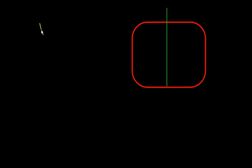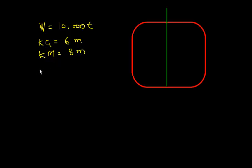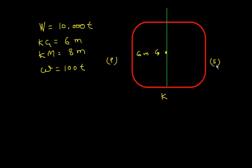If we load something on the ship, what happens to list? Let's start with this vessel. Suppose displacement is 10,000 tons, KG of the ship is 6 meters, and KM is 8 meters. We load a small weight W of 110 tons, and we define the coordinates: K and G, which is 6 meters. Looking at the ship in the transverse direction, this is port side and this is starboard side. The cargo is loaded somewhere here, the distance from the centerline is 5 meters, and the distance from the keel is 10 meters.